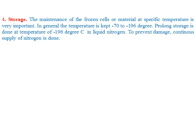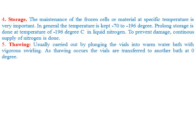The next step is storage. Generally, germplasm is stored at minus 190 degrees Celsius using liquid nitrogen. To prevent damage, we have to continuously supply liquid nitrogen at regular intervals. After storage comes thawing. When we need to regenerate cells and grow a new plant, we bring the stored germplasm back to an optimal temperature by using a water bath.